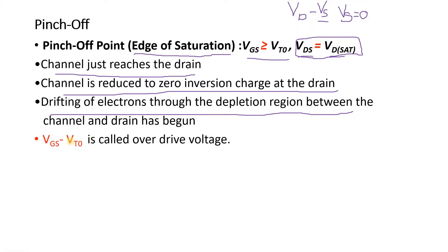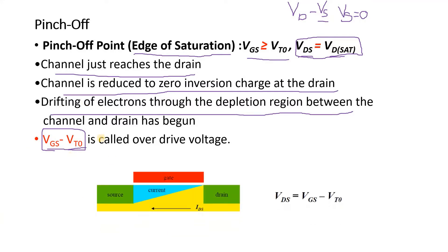The effective voltage in the channel is VGS minus VT0, where VGS is the voltage at gate with respect to source and VT0 is the threshold voltage of the MOS. For example, if you are applying 5 volts at the gate and your threshold voltage is 1 volt, then the effective voltage created in the channel is 4V. If you are applying 4V at the drain, this becomes 0 at the drain end.